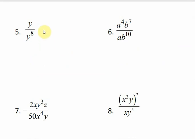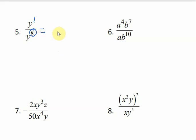Number five: this is an understood one, so my bases are the same, so I know I'm going to have a y. And if I subtract 1 from 8, I get 7. So I know it's going to be y to the seventh, but where does it need to go? In the denominator, because my bigger exponent is in the denominator. So to put it in the denominator, I have to put a 1 over it. So it's 1 over y to the seventh.